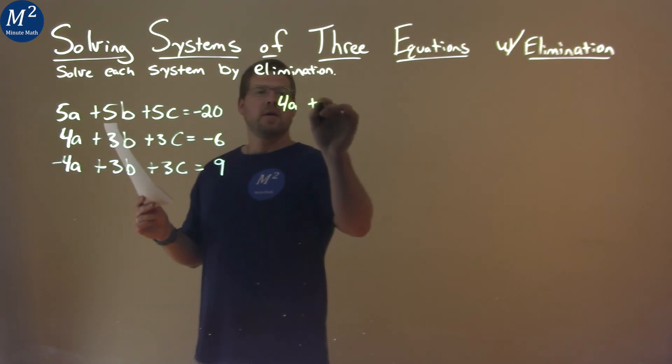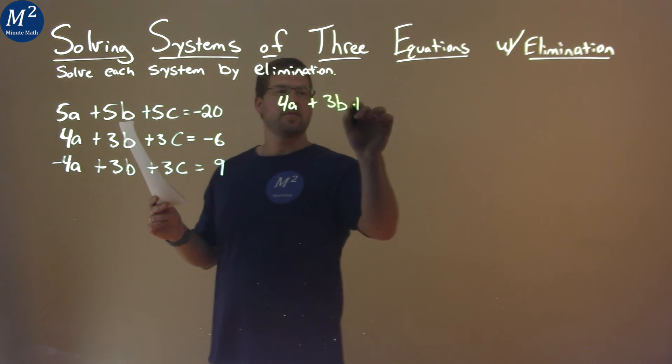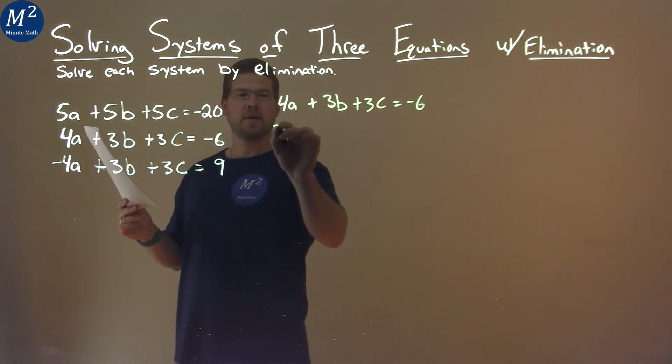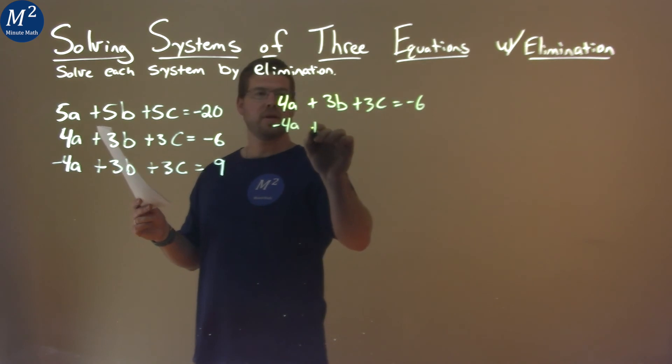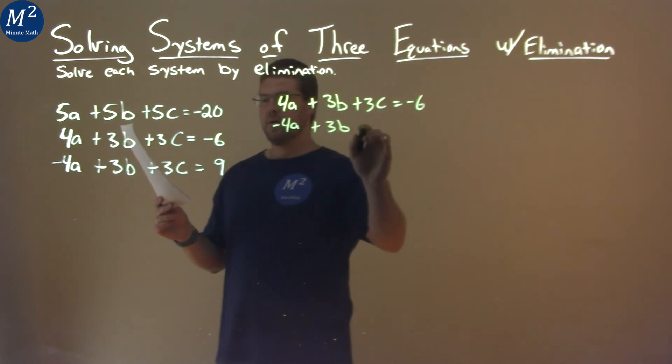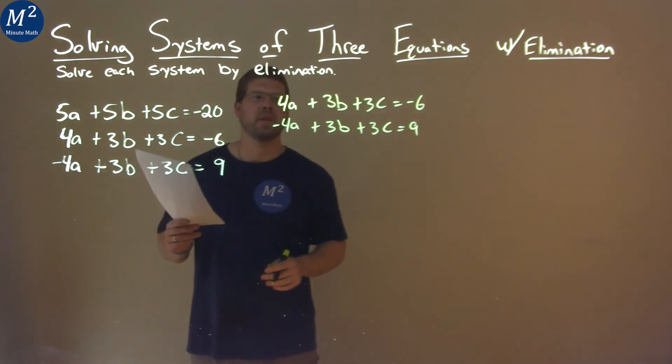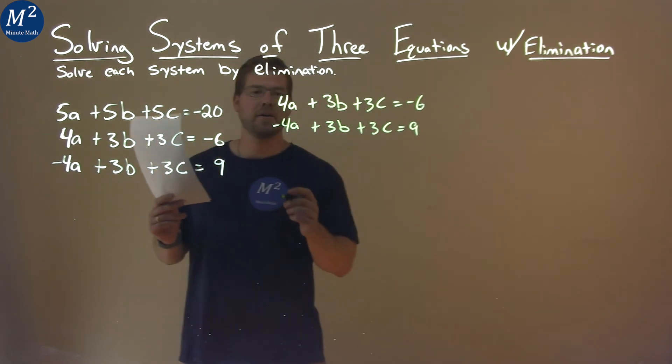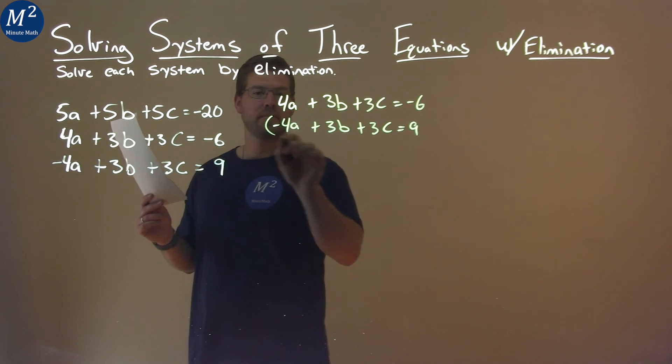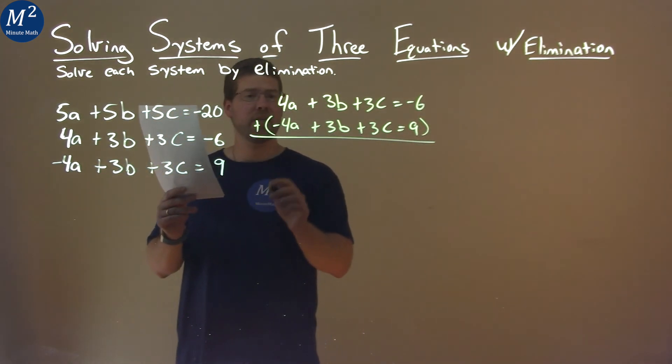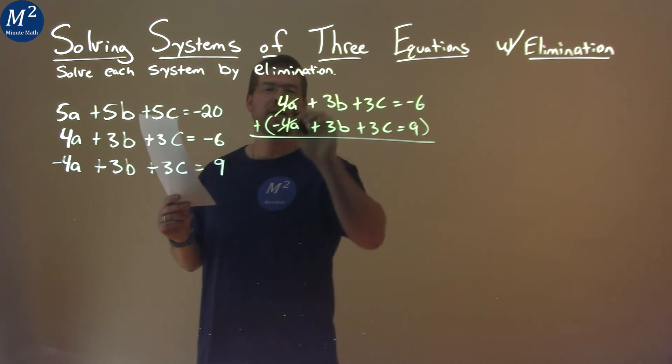4a plus 3b plus 3c equals negative 6, and then the second one, negative 4a plus 3b plus 3c equals 9. If I add these two equations right off the bat, and we're going to add them together, the a's are going to cancel. 4a plus negative 4a cancels out.